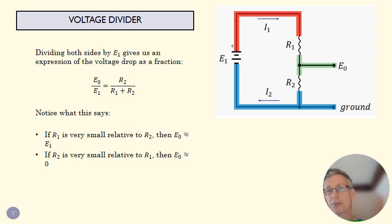If R2 is very small relative to R1, if we look at that over here, then I'm going to have essentially zero over some value R1, and that means E0 is going to be zero. And here we can see the same kind of logic. If this R2 is very small, then my voltage drop here is going to be very small, and E0 is going to be close to zero.